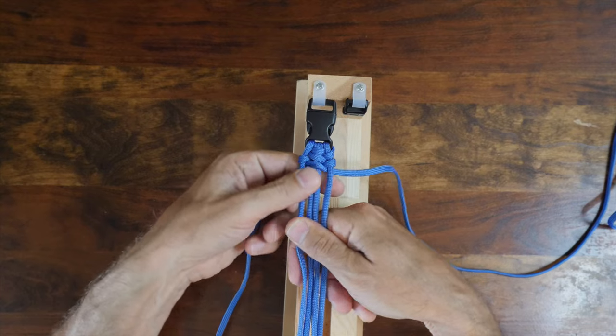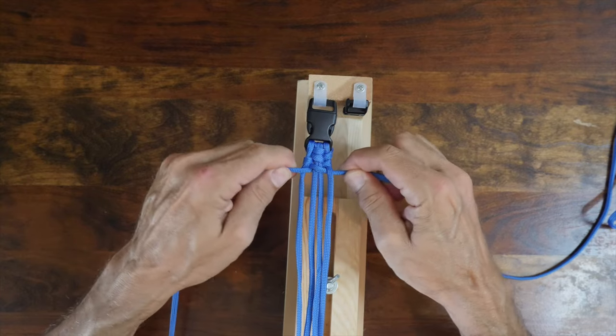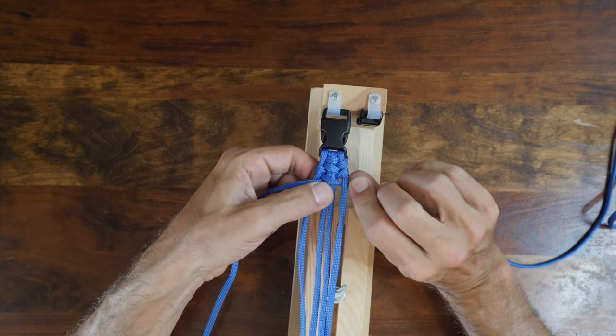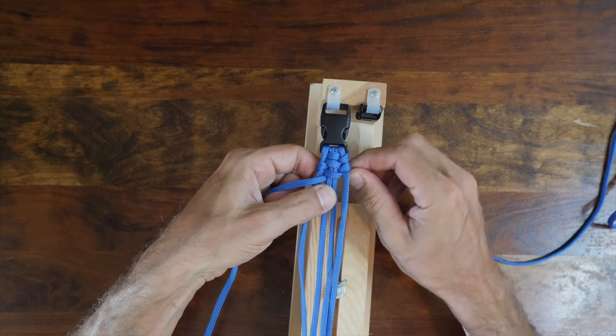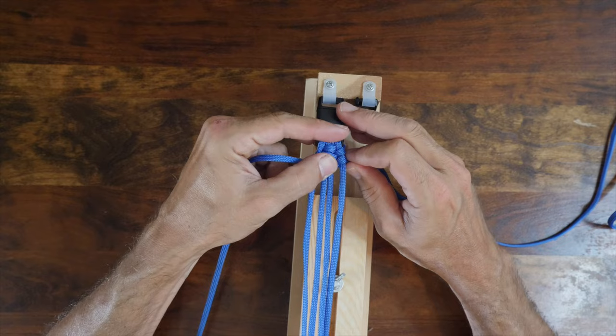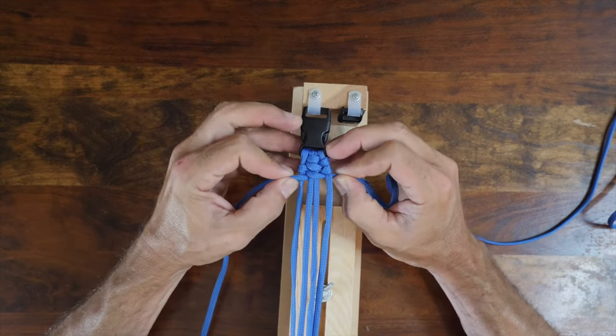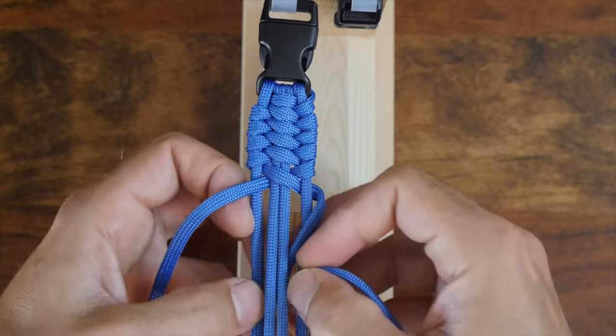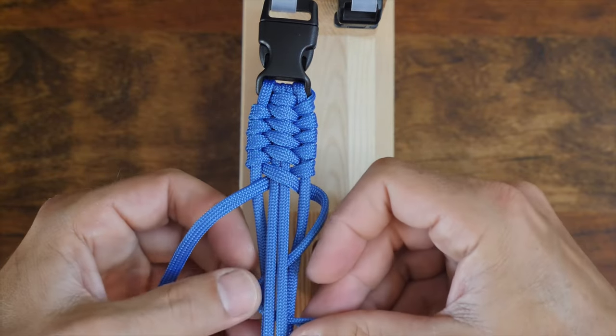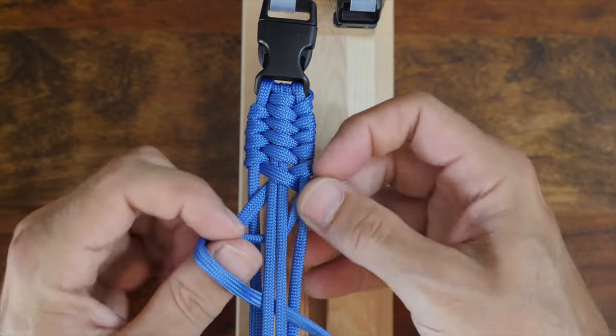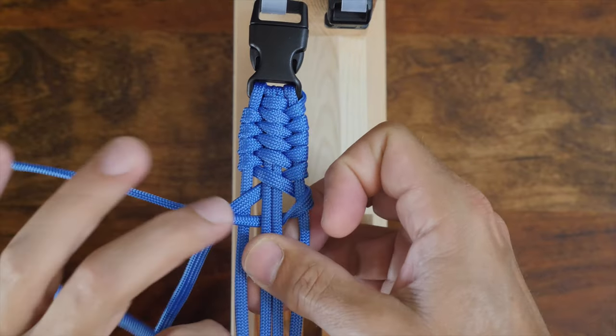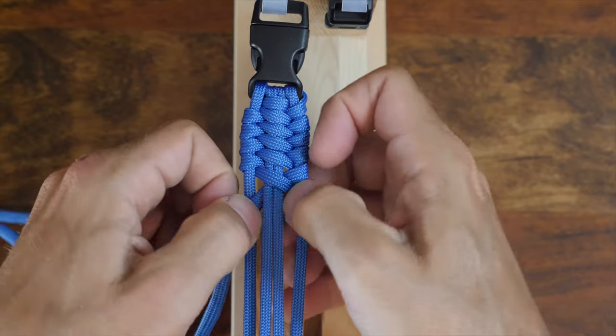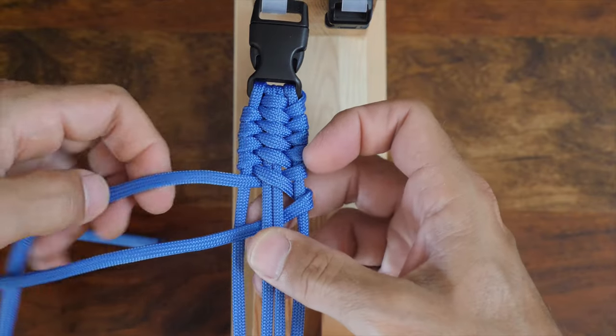As you can see, the trilobite paracord bracelet is an easy project and an original bracelet design. If you'd like to see the original paracord bracelet and how to tie it, then I highly recommend my video titled Easy and Original Paracord Bracelet. Link in the description and at the end of this video. Like I've mentioned, and you can now see, continue working your way down the length of the paracord bracelet using the same trilobite weave pattern.